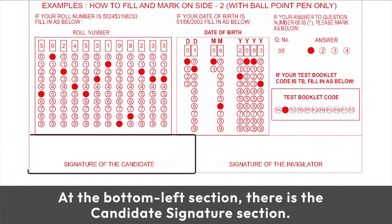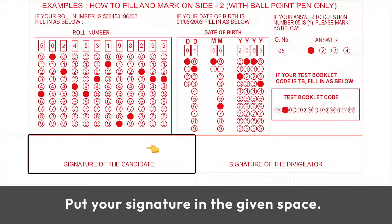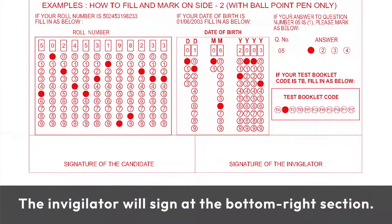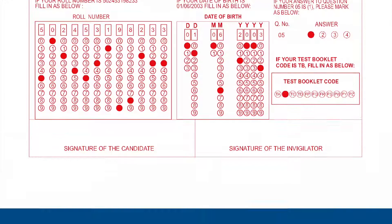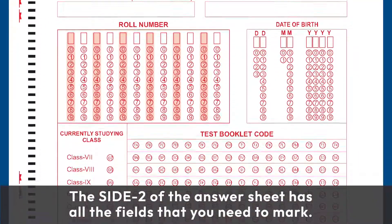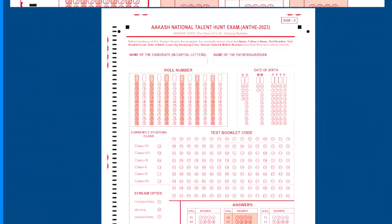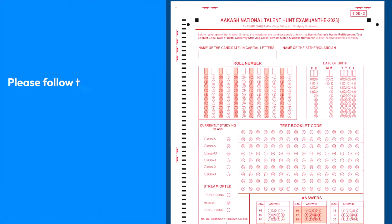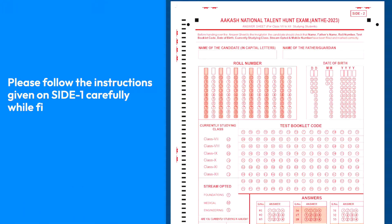At the bottom left section, there is a candidate's signature section. Put your signature in the given space. The invigilator will sign at the bottom right section. Side 2 of the answer sheet has all the fields that you need to mark. Please follow the instructions given on side 1 carefully while filling and marking your responses.